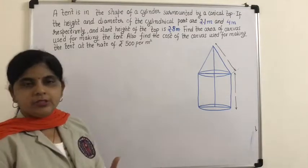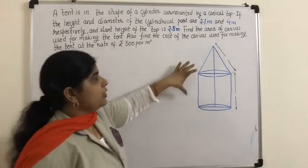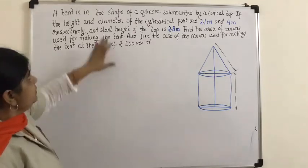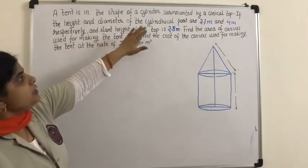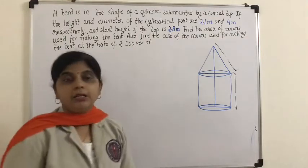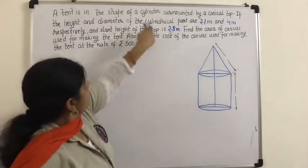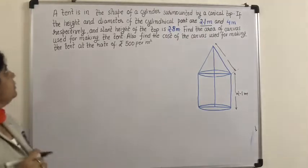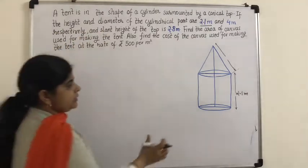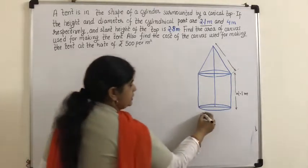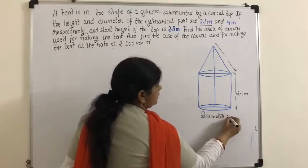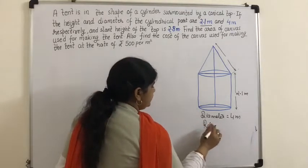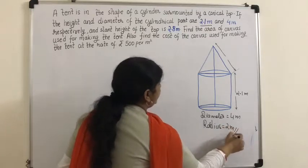So we are talking about two geometrical figures — a cylinder and a cone — and the dimensions of both parts are given. The height of the cylindrical part is 2.1 meters, and the diameter is 4 meters. So the radius will simply be 2 meters.